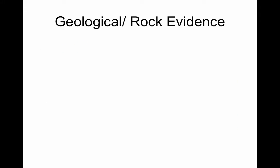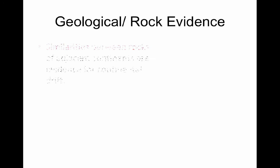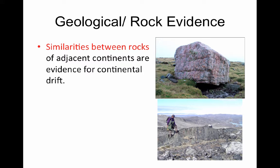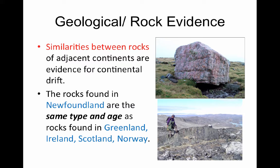Moving on to geologic rock evidence continuing from those mountain ranges: in places that were connected, they have similar rock features — similar layers of rocks and similar types of rocks. The main area that Wegener noticed this was in Newfoundland, Greenland, Norway, Scotland, and Ireland. The rocks found in these regions are made of the same composition, date back to the same time of formation, and have similar rock layers.